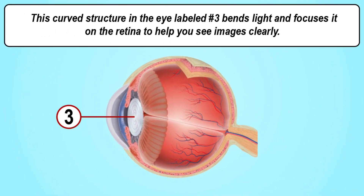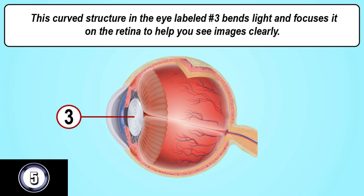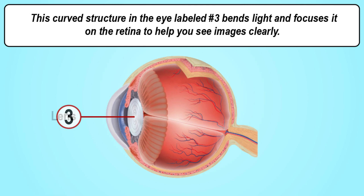This curved structure in the eye labeled number three bends light and focuses it on the retina to help you see images clearly. The answer is the lens.